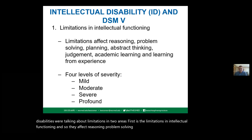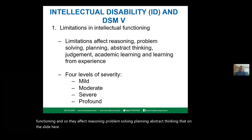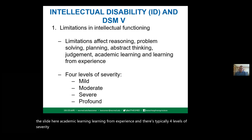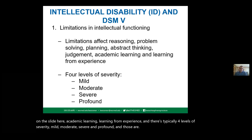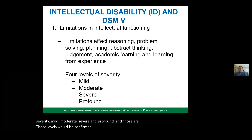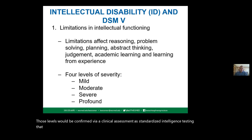abstract thinking, academic learning, and learning from experience. There are typically four levels of severity: mild, moderate, severe, and profound. Those levels would be confirmed via a clinical assessment and standardized intelligence testing — that would be how that information is obtained.